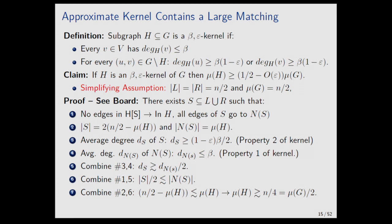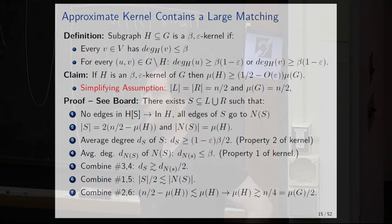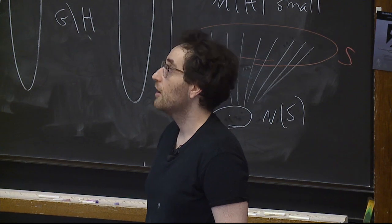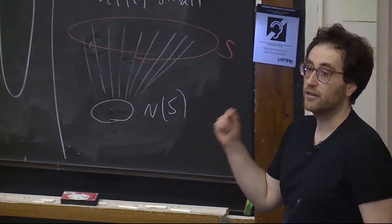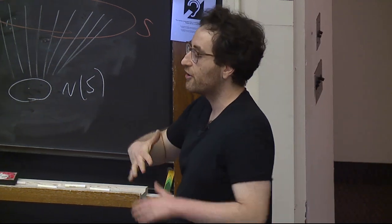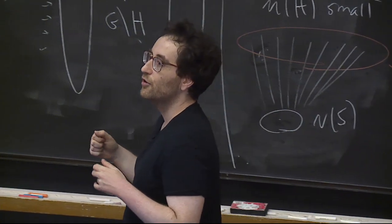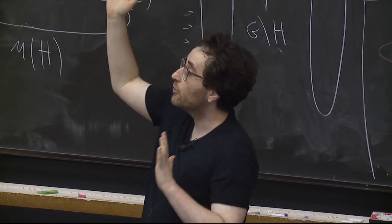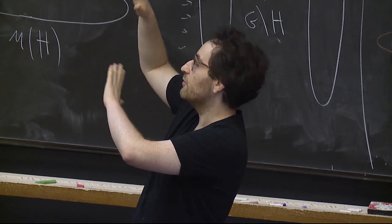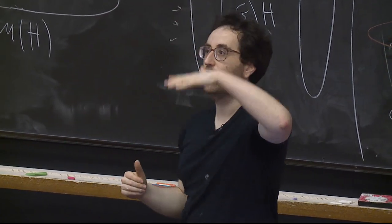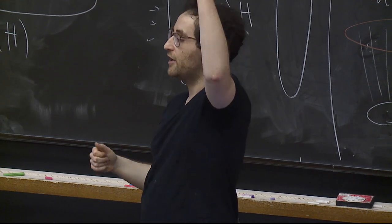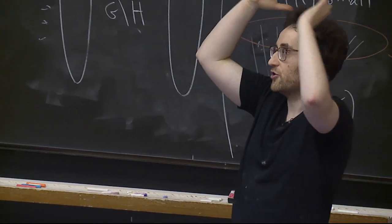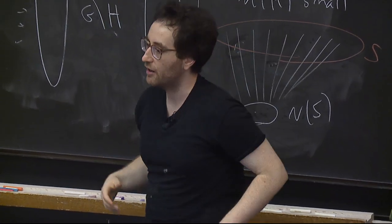A question: at no point does it seem like we used the value of beta — beta could have been anything. Yes, beta does not really matter for this result. Beta is basically our fault tolerance parameter: if you want to prepare for many faults you set beta big, but for this particular structural result it works for any beta. There's a tradeoff: few faults means small beta and a sparse graph; many faults means large beta and a bigger graph.